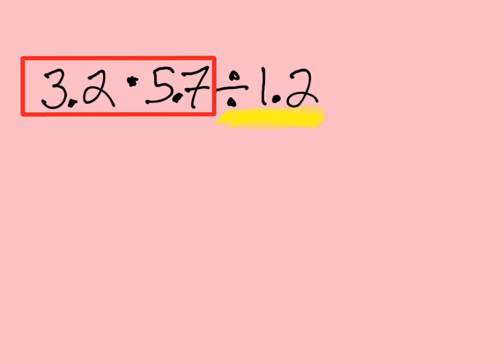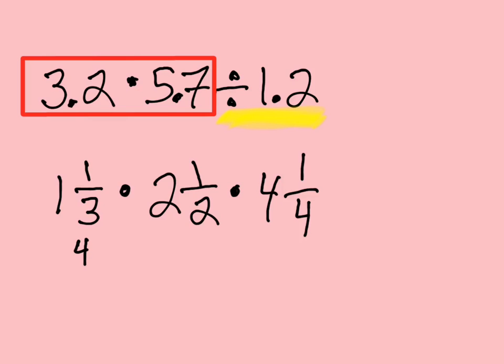Now this works with fractions also. So if I have 1 and 1/3 times 2 and 1/2 times 4 and 1/4, the first thing I want to do is get all my fractions into improper fractions. So this is 4/3, this is times 5/2 times 17/4.